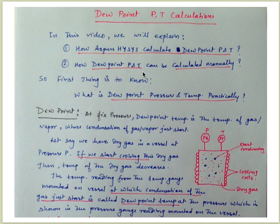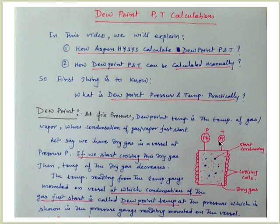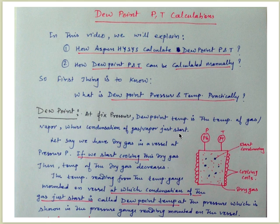In this video we will explain how HYSYS calculates dew point pressure and temperature, and how dew point pressure and temperature can be calculated manually. First, to understand dew point pressure and temperature practically, we take a vessel with cooling coils. Inside the vessel is dry gas, and on this vessel a pressure gauge and temperature gauge are mounted to read the pressure and temperature. At fixed pressure, dew point temperature is the temperature of gas or vapor where condensation just starts.